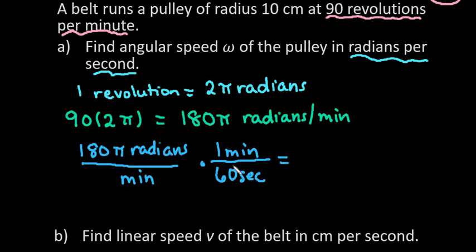Okay, so in order to get rid of our minutes and convert it to seconds, we would just divide by 60. So we end up with 3π radians per second.